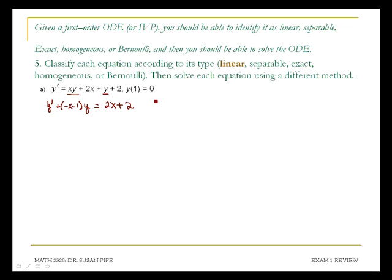When I introduce my integrating factor, my integrating factor is going to be e raised to the integral of the coefficient of y, which is negative x minus 1, integrating with respect to x. That's going to give me e to the negative x squared over 2 minus x.